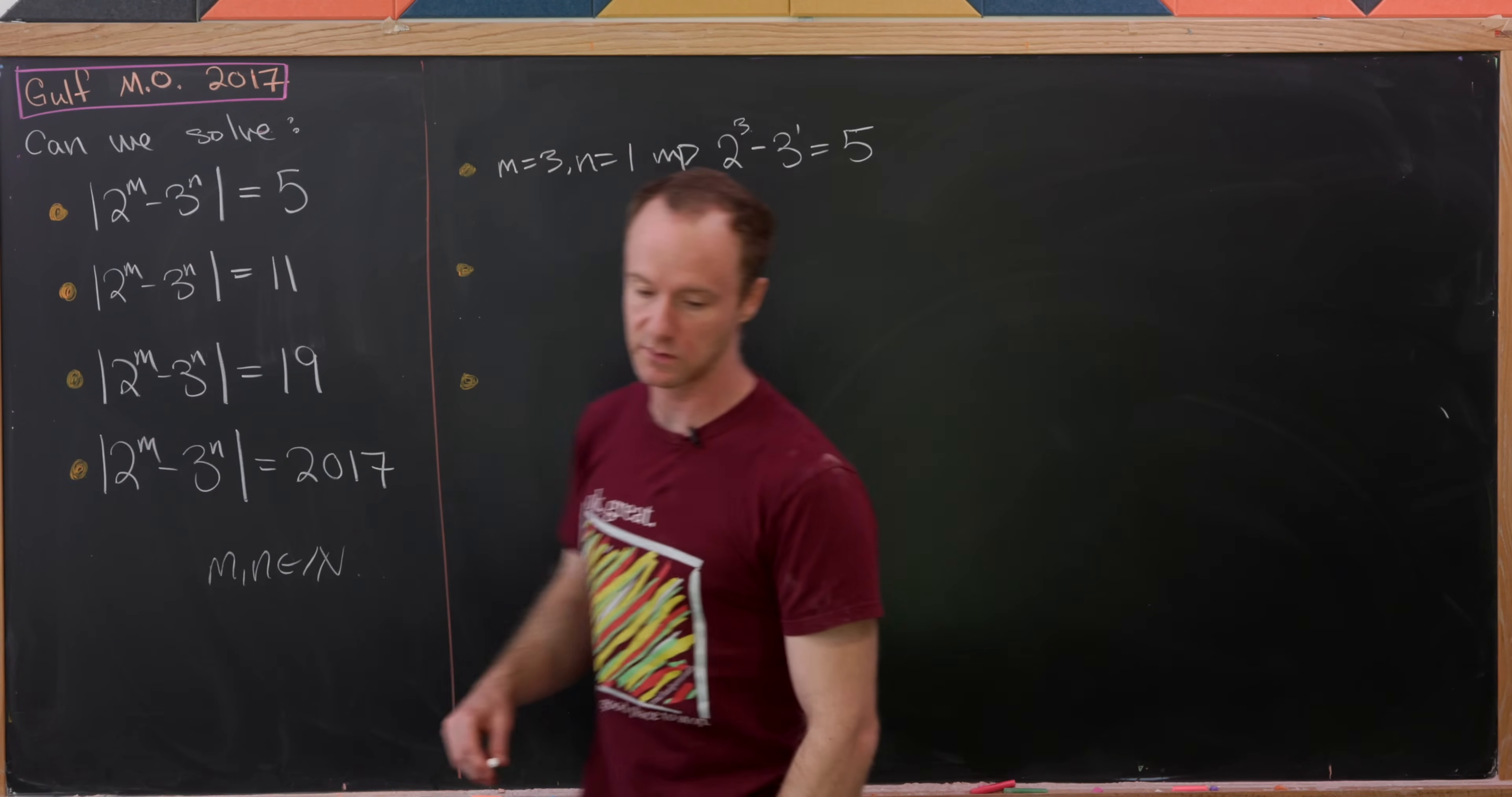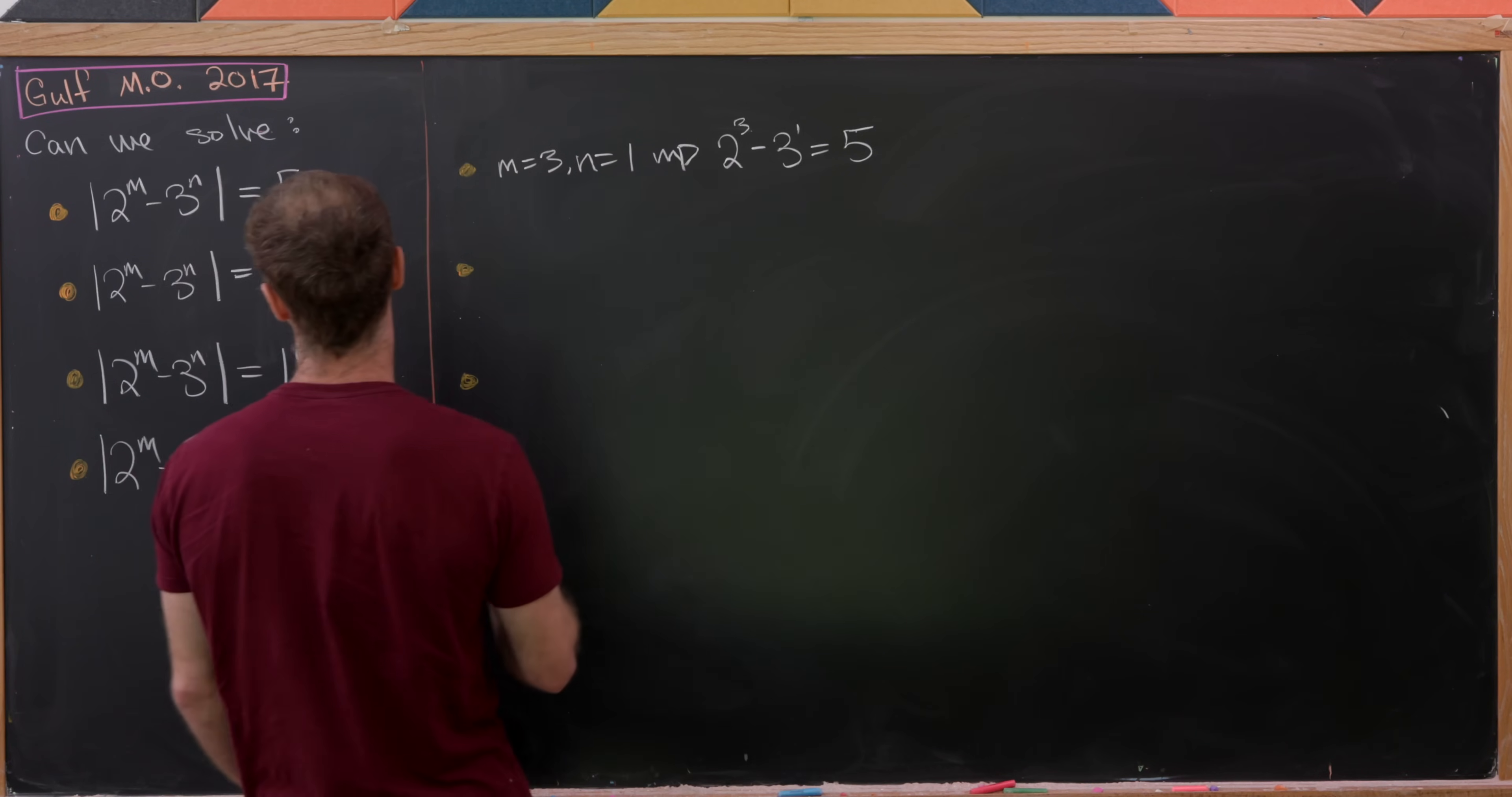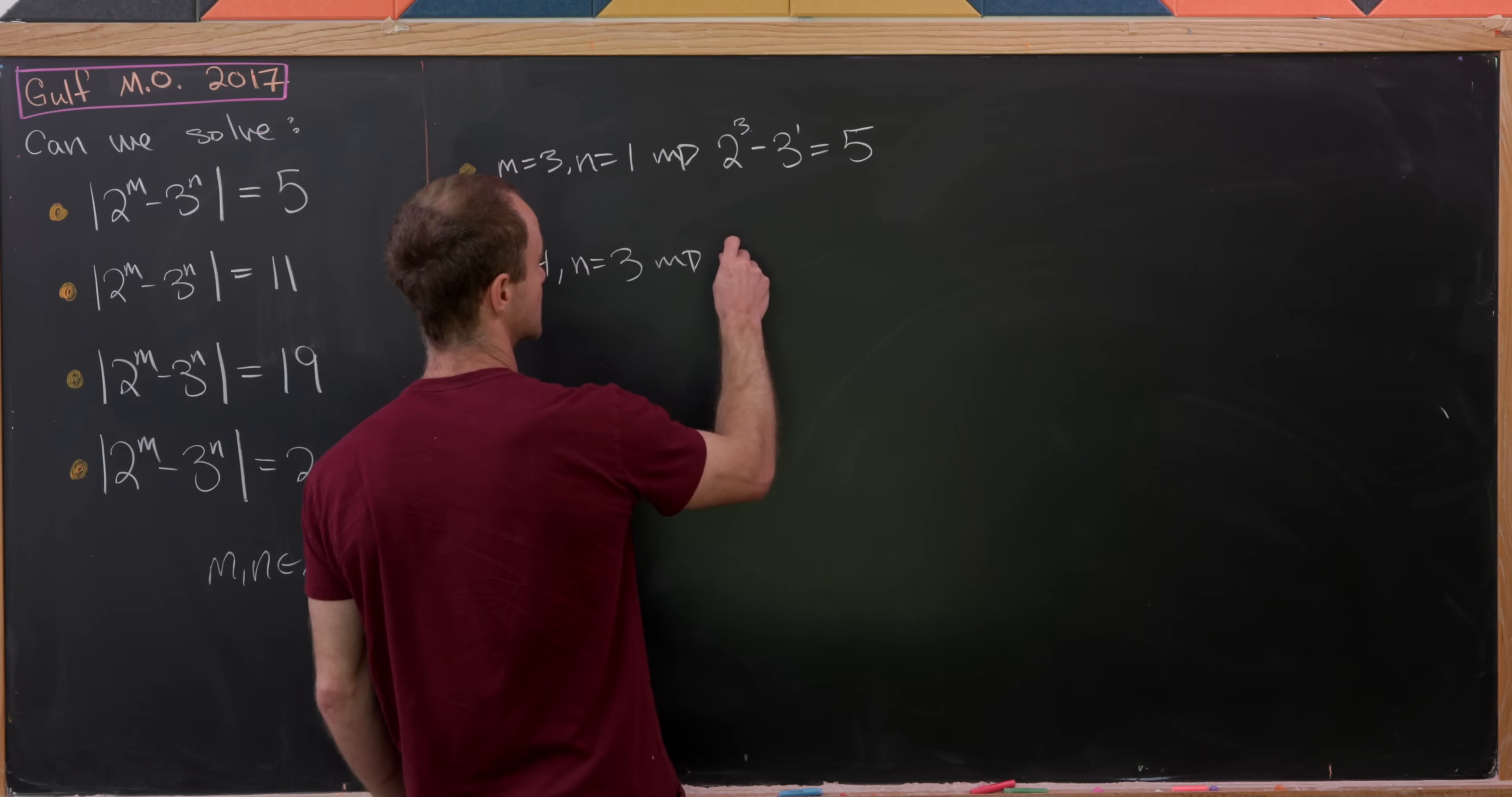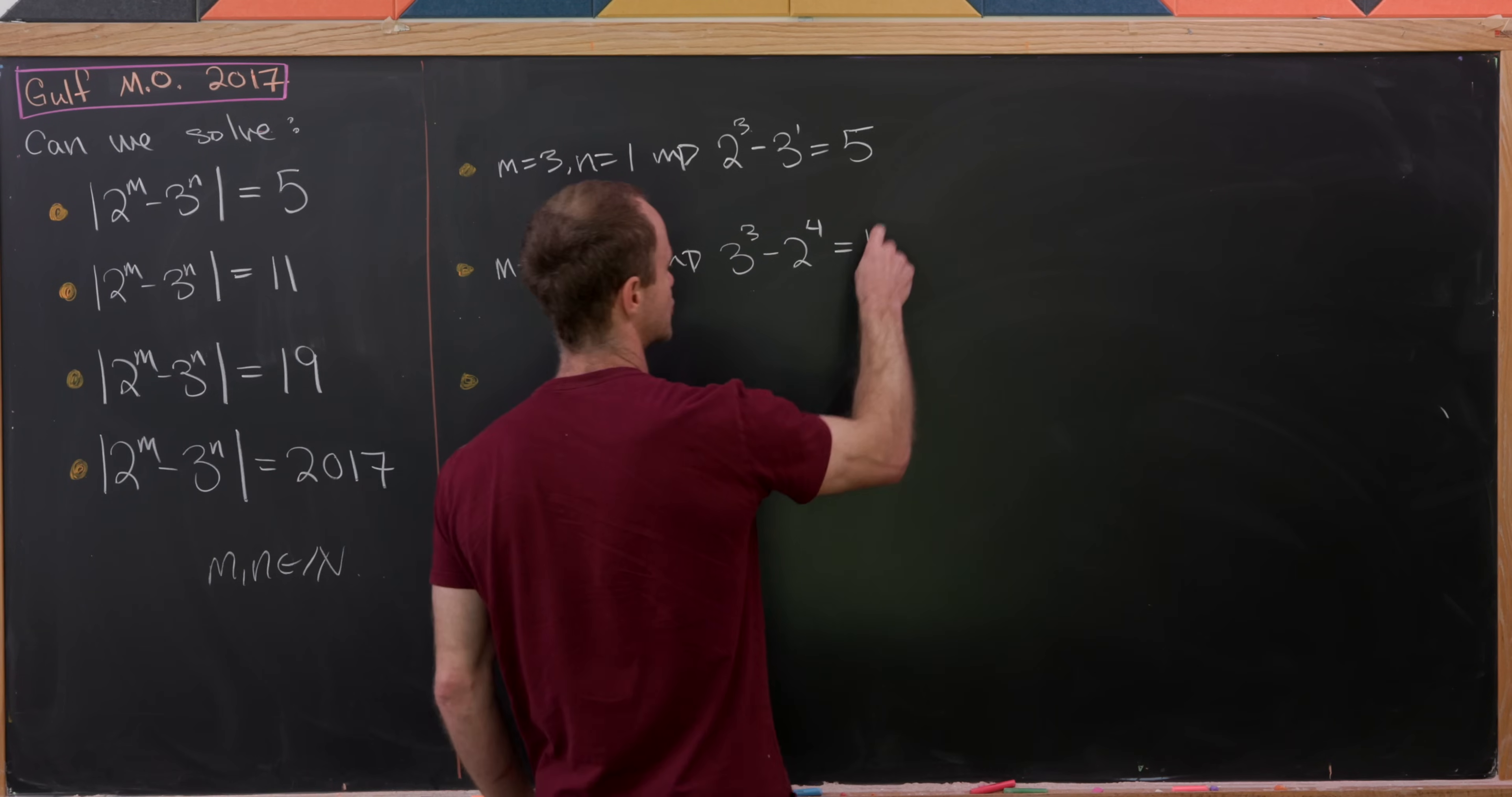Now moving on to this second one, can we find something that solves this for 11? And we can and it's fairly straightforward as well. Let's take m equal to 4 and n equal to 3. In this case we'll flip the difference because the power of 3 is larger. So we have 3 cubed minus 2 to the 4. That is 27 minus 16 which is for sure 11.